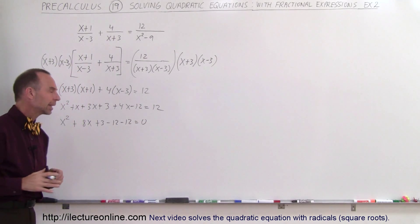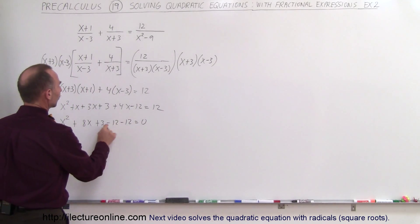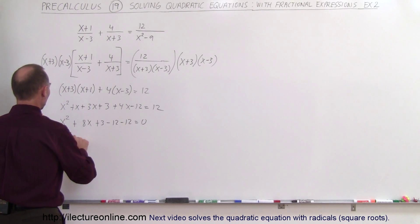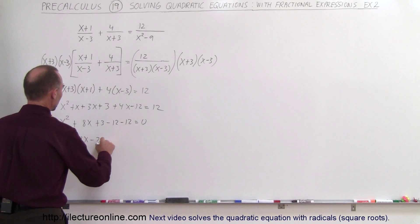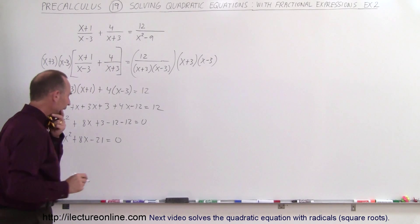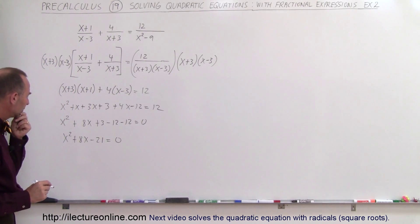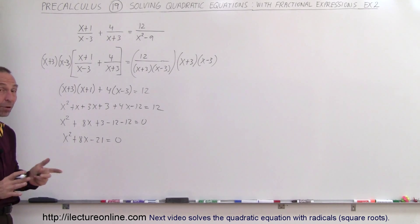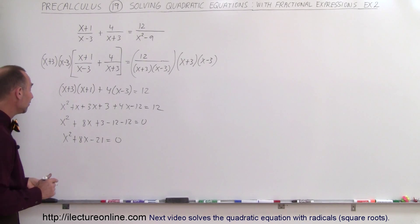We have plus 3 minus 12, and when we move that across, we get plus 3 minus 12 minus 12 equals 0. Just want to make sure we don't make any mistakes. So minus 24 plus 3 is minus 21, so we have x squared plus 8x minus 21 equals 0. I wonder if this is factorable. 7 times 3 is 21. No, it doesn't look like it, so we're going to use the quadratic formula.